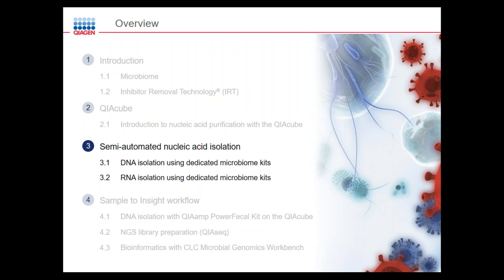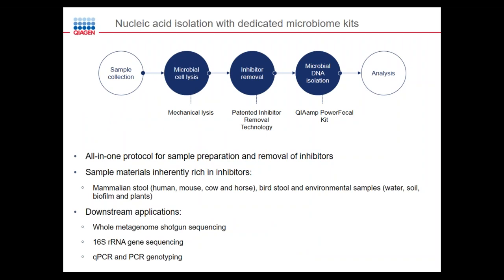This brings us to our third part: semi-automated nucleic acid isolation using DNA and RNA dedicated microbiome kits. These follow an all-in-one protocol for sample preparation and inhibitor removal, beginning with collection, followed by mechanical microbial cell lysis, then inhibitor removal using our patented inhibitor removal technology, and finally isolation of microbial DNA by binding, washing, and eluting on a spin column. These protocols are designed for sample materials inherently rich in inhibitors, including mammalian stool (human, mouse, cow, horse), bird stool, and environmental samples like water, soil, biofilm, and plants. The DNA is ready for immediate use in downstream applications like whole genome sequencing, 16S PCR, qPCR, or PCR genotyping, with no additional cleanup necessary for the large majority of sample types.